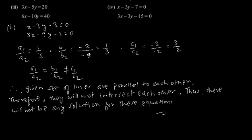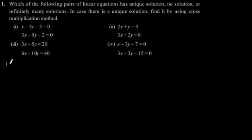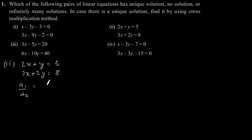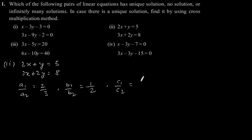Now the second part. Second is: 2x plus y is equal to 5, and 3x plus 2y is equal to 8. So, a1 by a2 will be 2 by 3, b1 by b2 will be 1 by 2, and c1 by c2 will be minus 5 by minus 8.